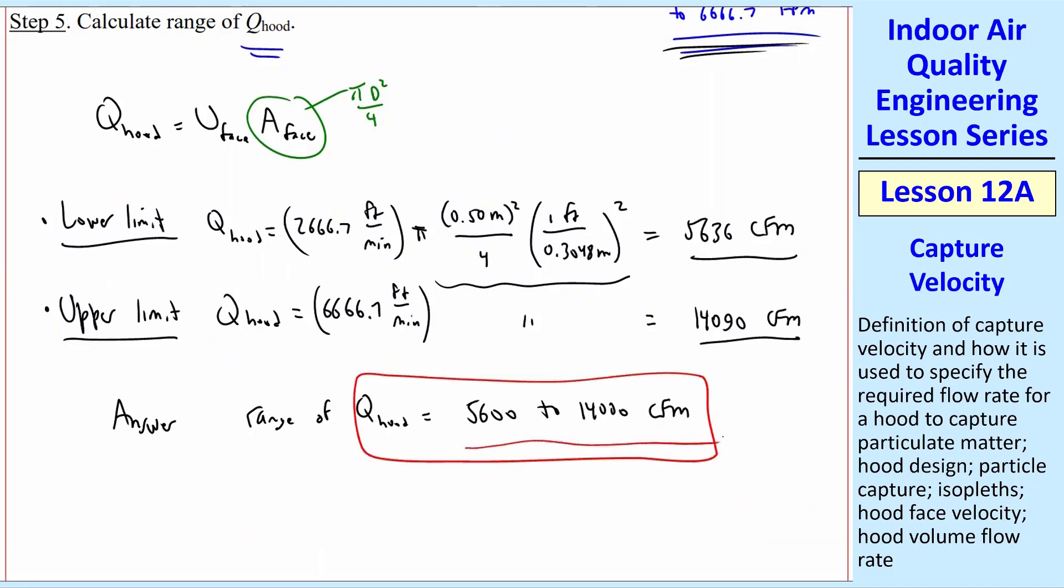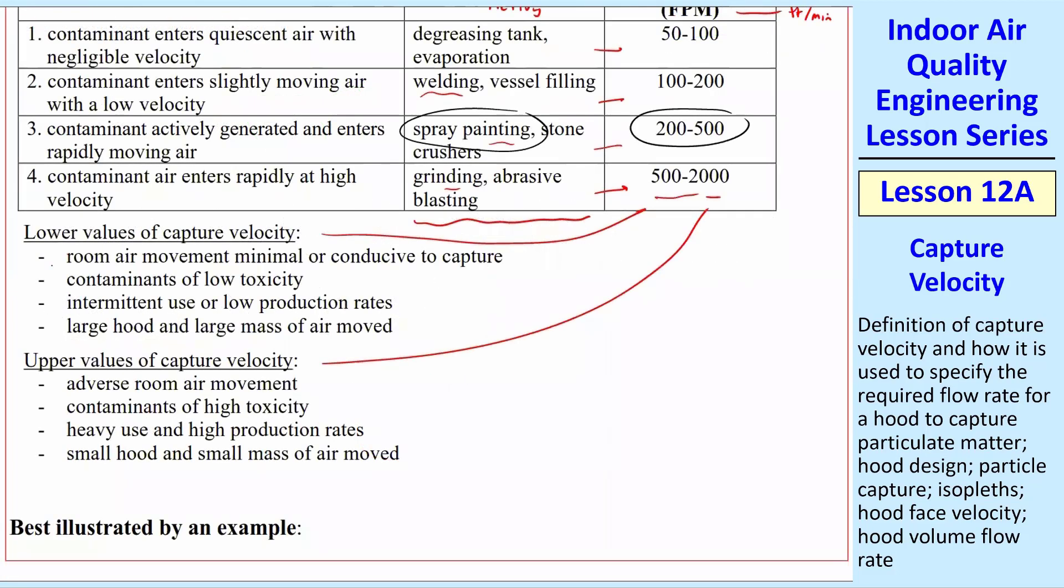Which of these are you closer to, the lower value or the upper value? Well, you go back to the table. If there's very few room movements, and so you can capture these easily, they're low toxicity, et cetera, you'd use the lower values. If there's lots of bad stuff going on, lots of room air movement, et cetera, high toxicity, you use the upper limit.